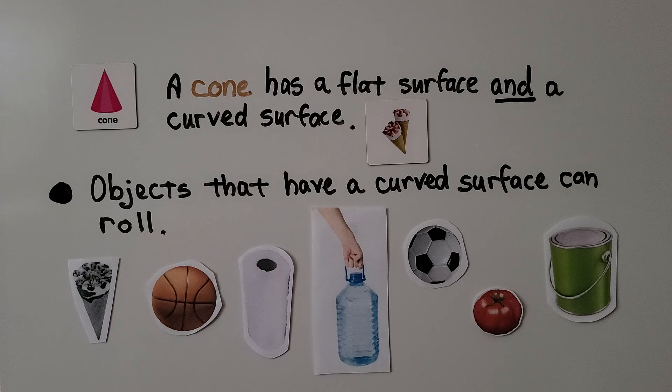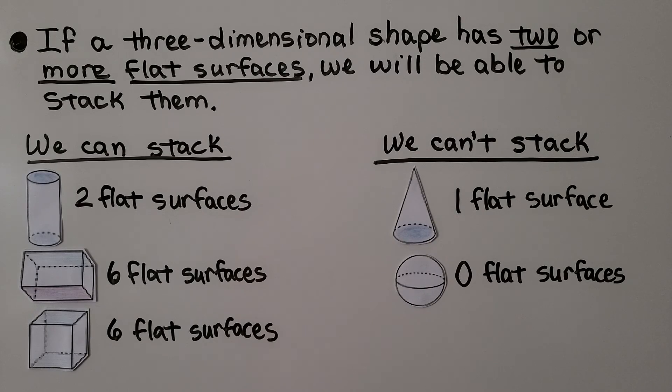A rectangular prism and a cube have flat surfaces, we can't roll them. If a three-dimensional shape has two or more flat surfaces, we'll be able to stack them. Maybe make a tower.